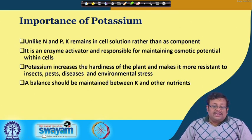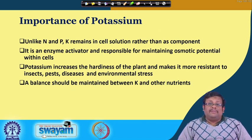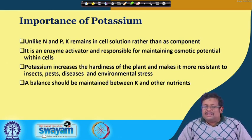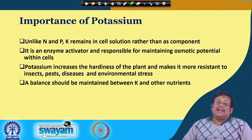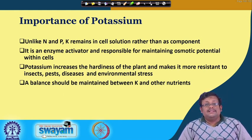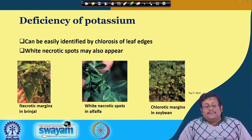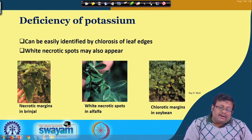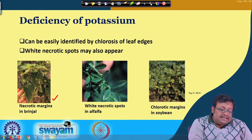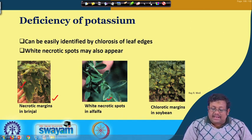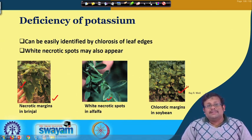Unlike nitrogen and phosphorus, potassium remains in cell solution rather than as a structural component. It is an enzyme activator and responsible for maintaining osmotic potential. Potassium is taken up by the plant as K⁺. Potassium increases the hardiness of the plant and makes it more resistant to insects, pests, disease, and environmental stress. A balance should be maintained between potassium and other nutrients. Deficiency of potassium can be identified by chlorosis on leaf edges, white necrotic spots, as seen in brinjal, alfalfa, and soybeans.